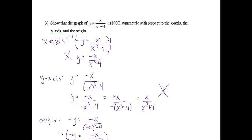Again, I'm going to multiply the whole entire equation by negative 1. And on the right side, remember, you're really only multiplying the numerator by negative 1. So I'm going to get y equals x over negative x cubed minus 4. And that definitely is not the same as the original, so it is not symmetric with any one of them.